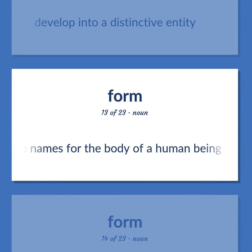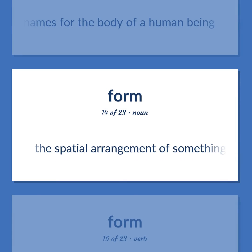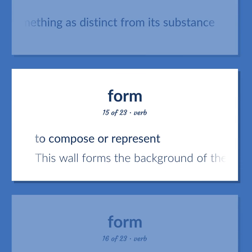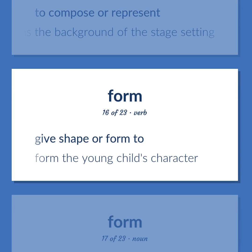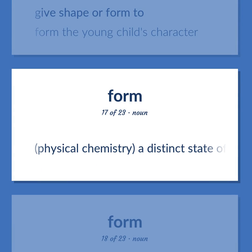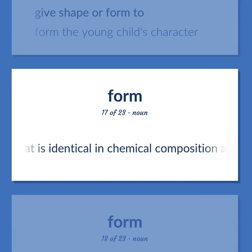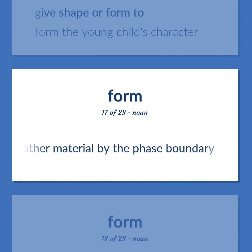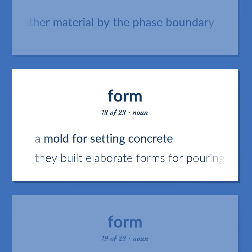Form (continued): Alternative names for the body of a human being. The spatial arrangement of something as distinct from its substance. To compose or represent. Example: This wall forms the background of the stage setting. Give shape or form to. Example: Form the young child's character. Physical chemistry: a distinct state of matter in a system — matter identical in chemical composition and physical state, separated from other material by the phase boundary. A mold for setting concrete. Example: They built elaborate forms for pouring the foundation.